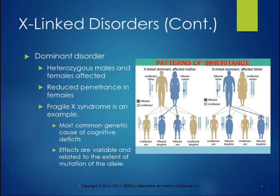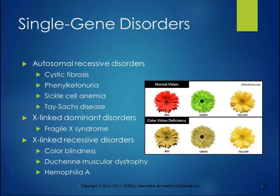With X-linked dominance, heterozygous males and females are both affected, but there is reduced penetrance in females because they still have a 50-50 chance of not expressing the gene. Fragile X syndrome is an example of an X-linked dominant disorder and is the most common genetic cause of cognitive defects. The effects are variable and related to the extent of the mutation of the allele. To summarize inheritance patterns: autosomal recessive includes cystic fibrosis, PKU, sickle cell anemia, and Tay-Sachs; X-linked dominant includes Fragile X; X-linked recessive includes color blindness, Duchenne muscular dystrophy, and hemophilia A.